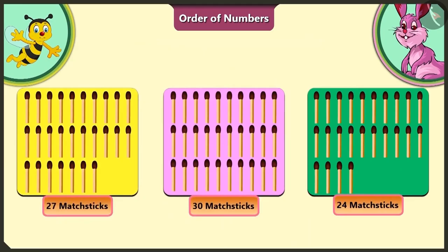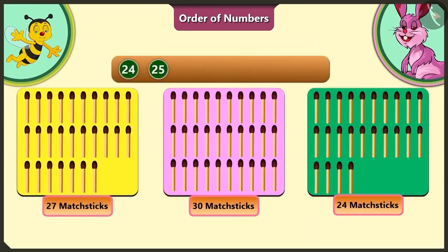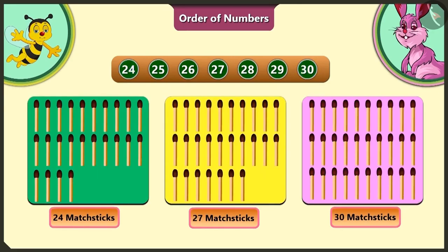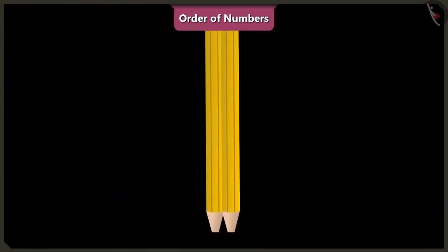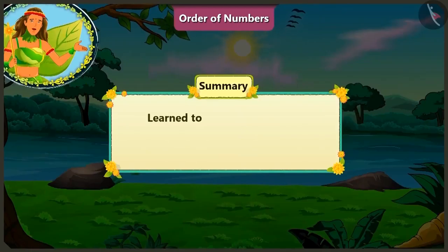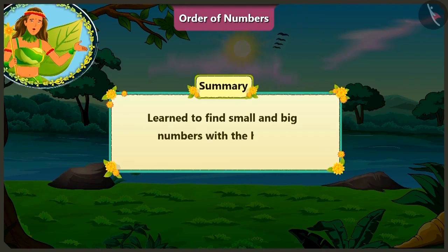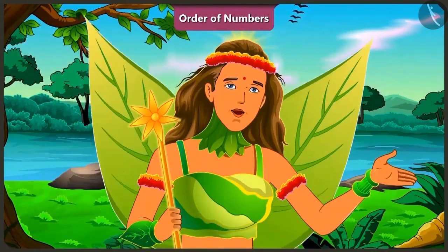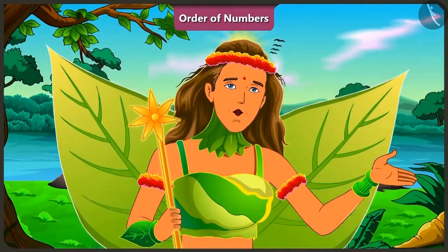So counting in order we get 24, 25, 26, 27, 28, 29, and 30. The green card has the least matchsticks and the pink card has the maximum number of matchsticks. So if we arrange them in order from small to big, we place the green card first, then the yellow card, and the pink card at the end. Children, today we learned how to find small and big numbers with the help of matchsticks. In the next video, we will understand about ordinal numbers.